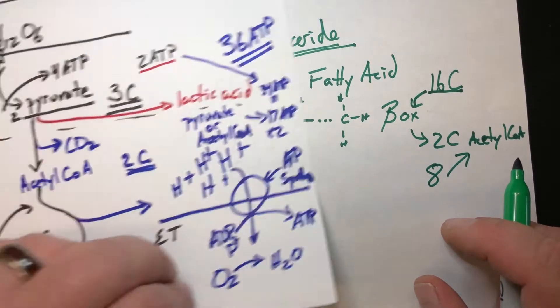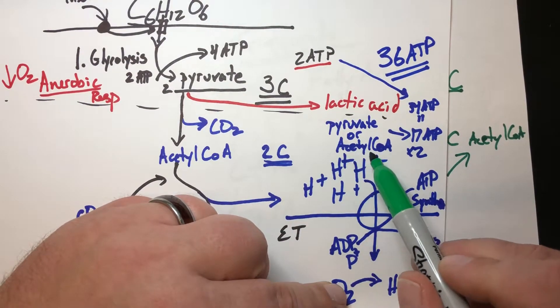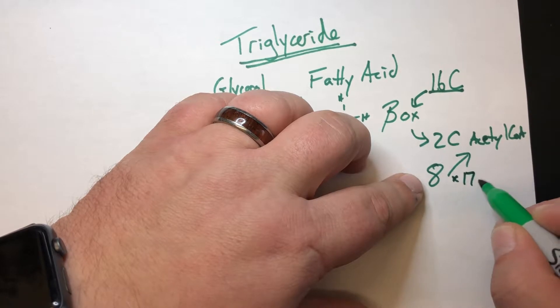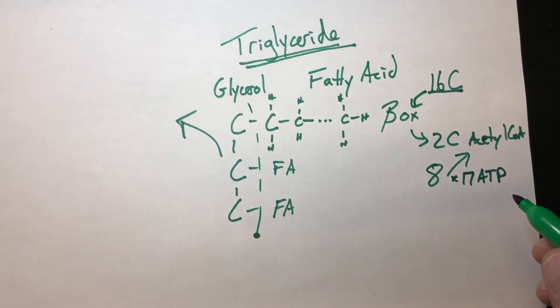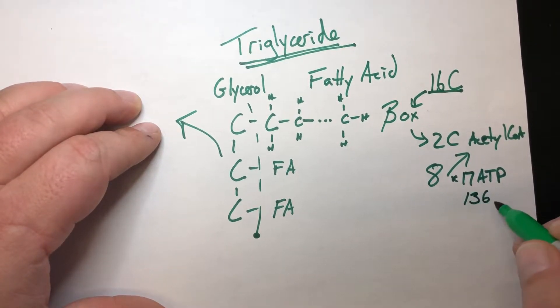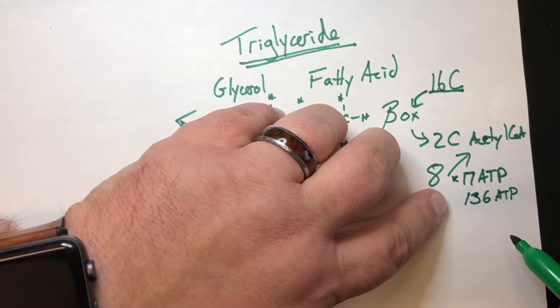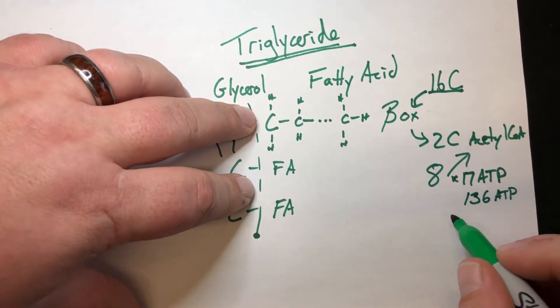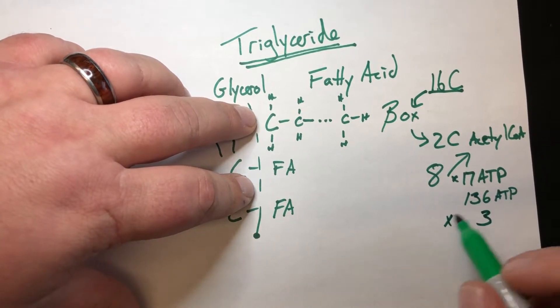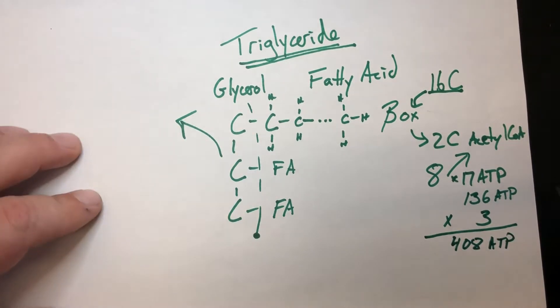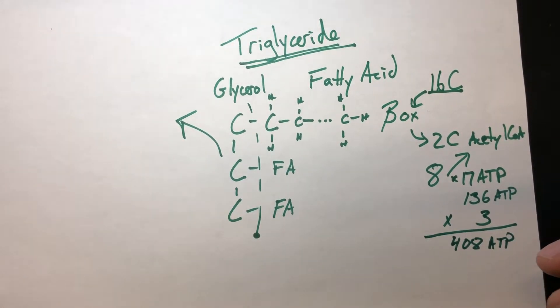And like we said before, just kind of grab this, that one acetyl-CoA can give us 17 ATP. So 8 acetyl-CoA times 17 ATPs, and we can produce upwards of 136 ATPs after beta-oxidation of that one fatty acid chain, except we don't just have the ability to go through beta-oxidation on that one chain. We have three chains, and so we can charge up 408 ATP from that series of 16 carbon fatty acid chains.